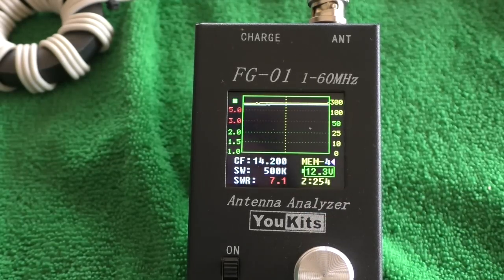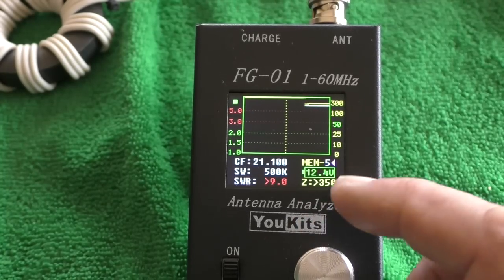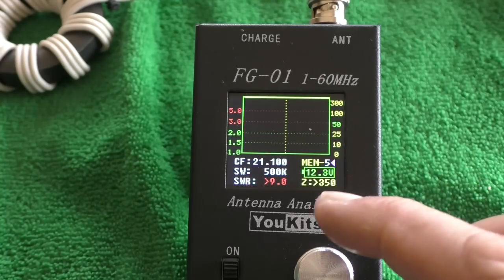20 metres, 14.2 megs, SWR 7 to 1, 254 ohms. Ha ha ha ha ha ha. There we go, 21 megs. I hope that's focused okay. Oh, you can actually hear the antenna analyser on the scanner in the background. It's obviously got some harmonics on 2 metres. 21.1 megs, SWR is greater than 9, impedance is greater than 350 ohms.